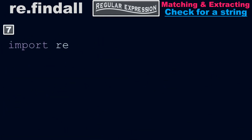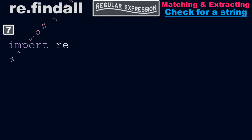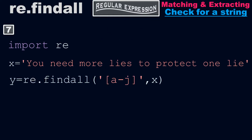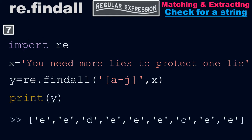Import the regular expression library. x equals 'you need more lies to protect one lie'. Then y equals re.findall([a-j], x). Take the print of y — it gives the output: e, e, d, e, e, e, c, e, e.